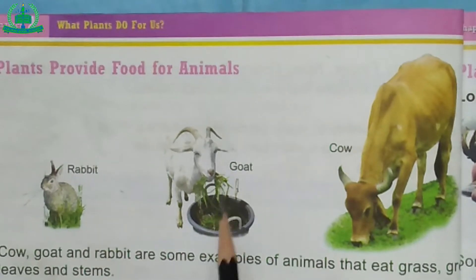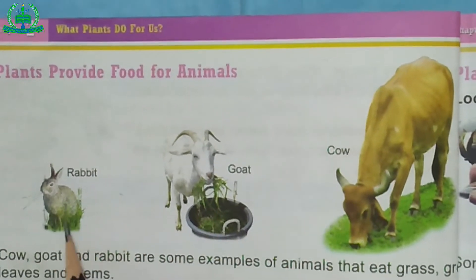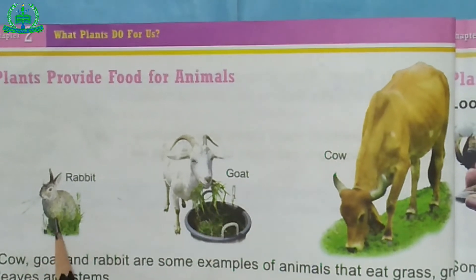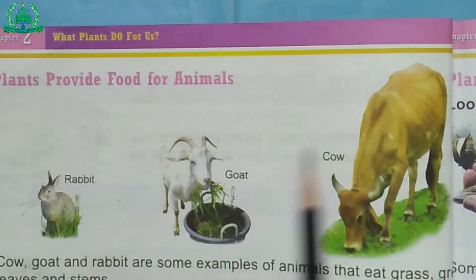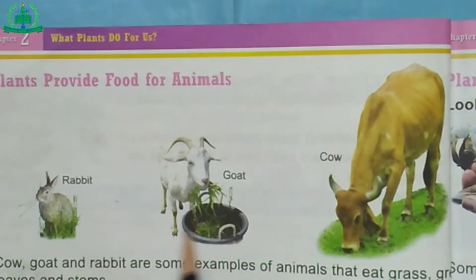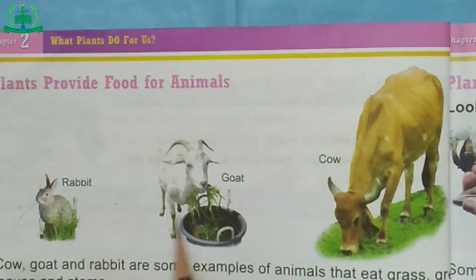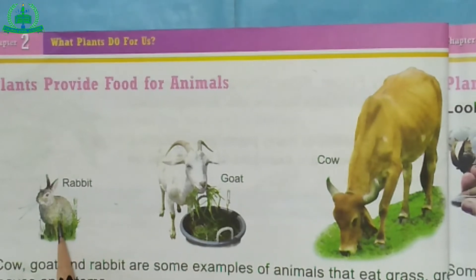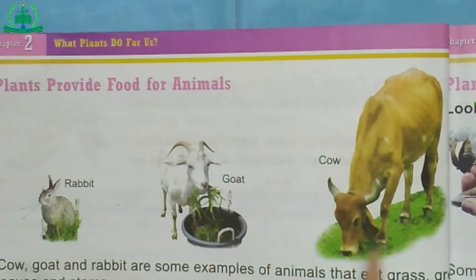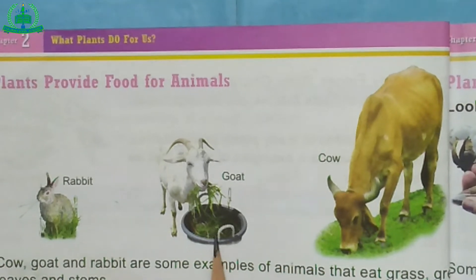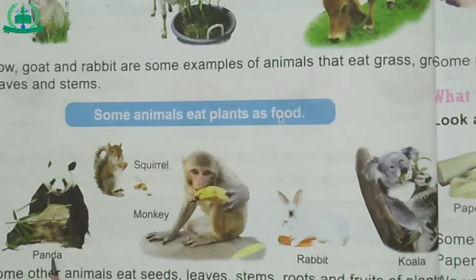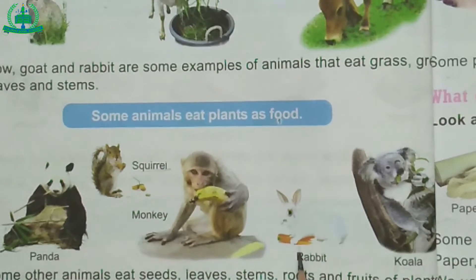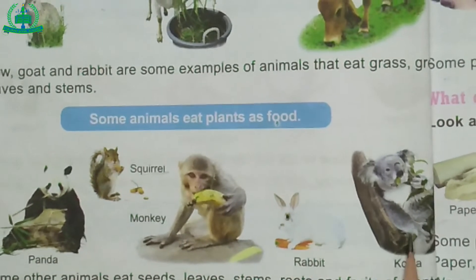Plants provide food for animals. Cow, goat and rabbits are some examples of animals that eat grass, green leaves and stems. Some animals like panda, squirrel, monkey, rabbit and koala eat plants as food.